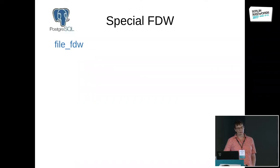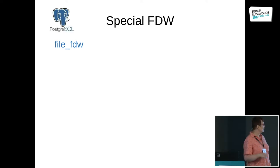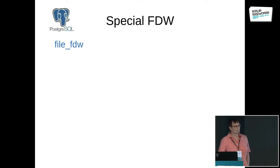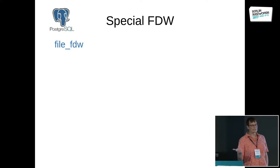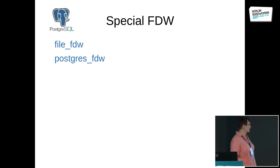But that's not all — there are some special foreign data wrappers available. The first one is a file foreign data wrapper. For everybody who knows the COPY command in Postgres, the COPY command has the same parameters as this file foreign data wrapper. That means you can include a CSV file and define the settings: does it have a header, what is the column separator, text separator, and so on.